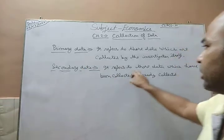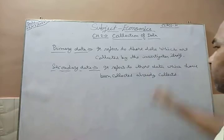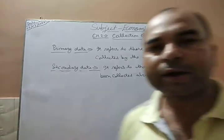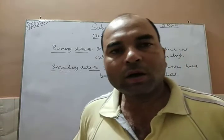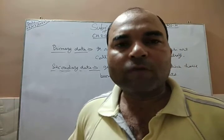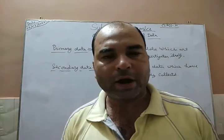On the other hand, secondary data refers to those data which have been collected already by someone else. For example, if you search on the internet and count the national income from 2001 to 2011, you are using secondary data because that data was already collected by someone else.